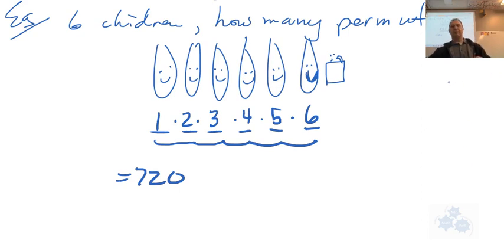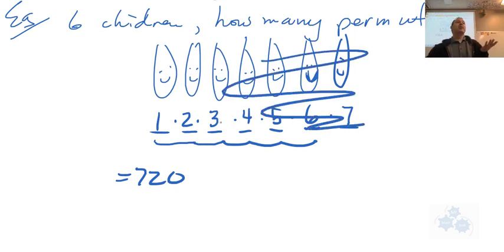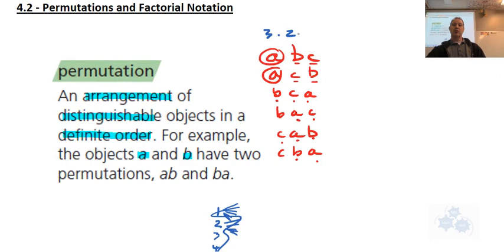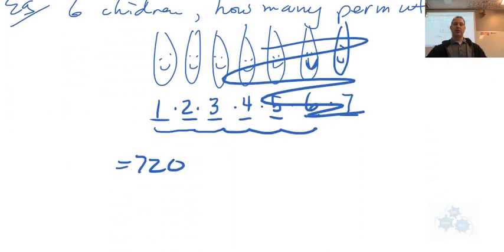Would this be just as easy if we had seven or eight kids? If there's another kid, we now have seven kids, so the first position has seven choices: 7×6×5×4×3×2×1. If there were just three kids — A, B, C — it would be 3×2×1, which is six. I hope you're connecting this: fundamental counting principle and permutations.